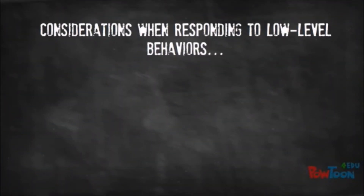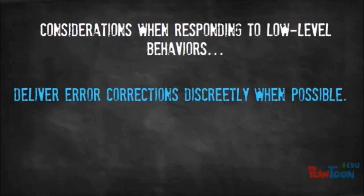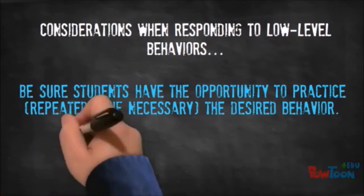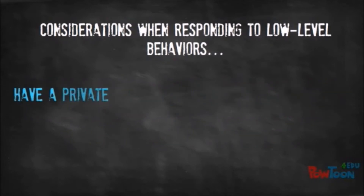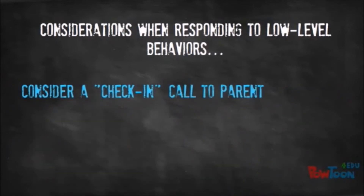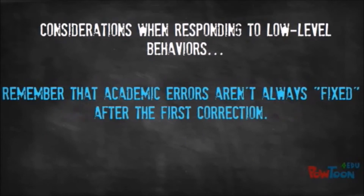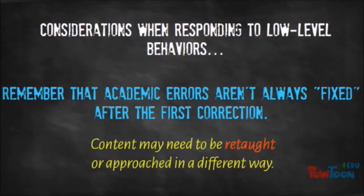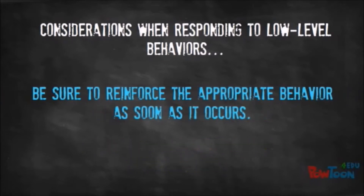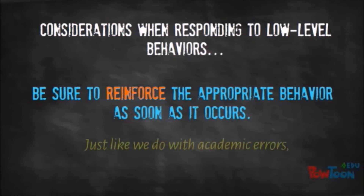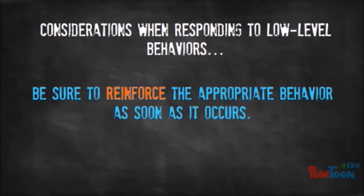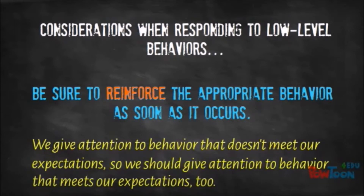Some considerations when responding to low-level behaviors: deliver error corrections discreetly whenever possible. Ensure students have plenty of opportunities to practice the desired behavior — students may need additional practice with behavior skills just like academic skills. Try to have a private conversation to identify setting events increasing the likelihood of inappropriate behavior. Consider checking in with parents or guardians if initial error correction isn't successful. Behavior errors aren't always fixed after the first correction, so increase your level of support. Always reinforce appropriate behavior as soon as it occurs and acknowledge when students correct behavior errors.